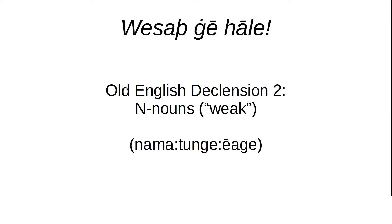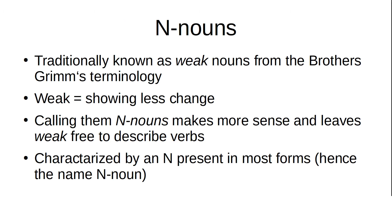Welcome to English Made Adwine. This is the second video on Old English declension, and today we're going to be looking at N-nouns, which you might have also heard of as weak nouns. So these are the Nama, Tunga, and Alde declensions — the N-nouns.